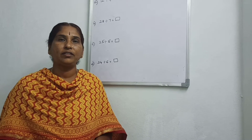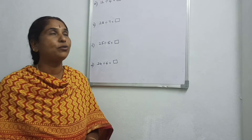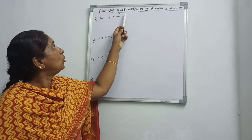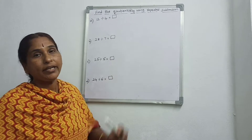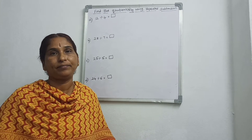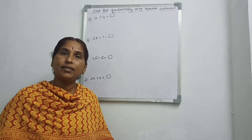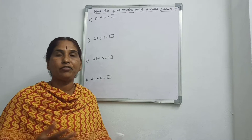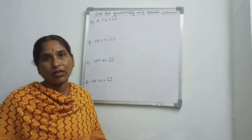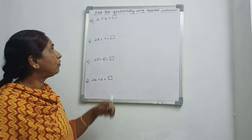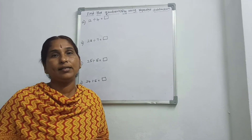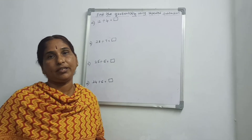Good morning children. Today we are going to learn to find the quotient by using repeated subtraction. Division means repeated subtraction. Now today we are going to find the quotient by using repeated subtraction.